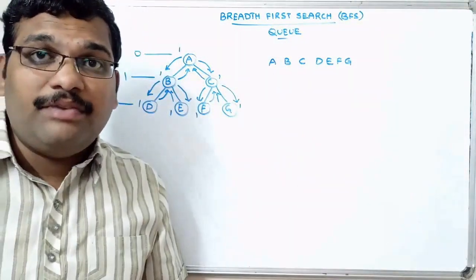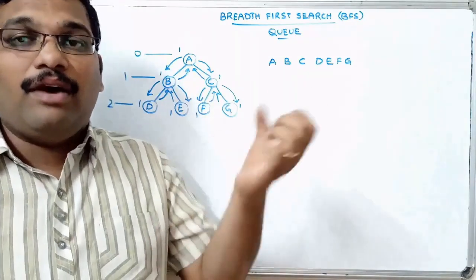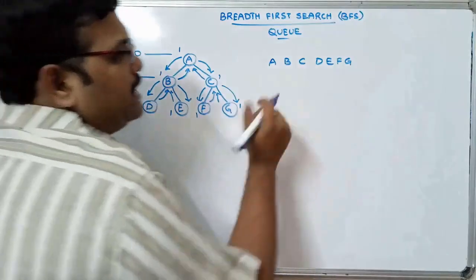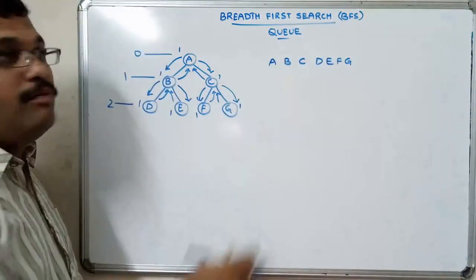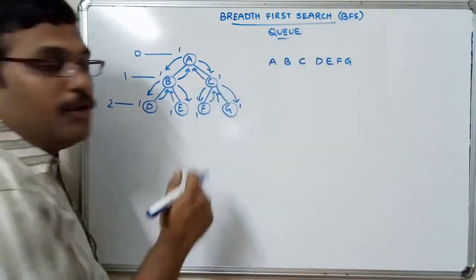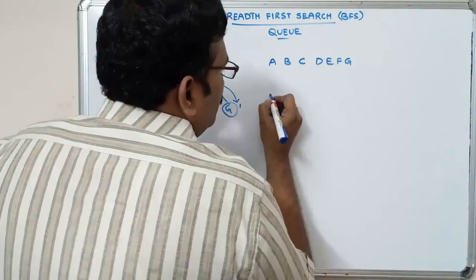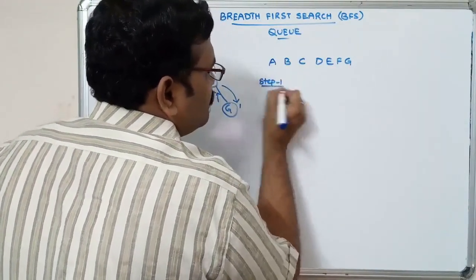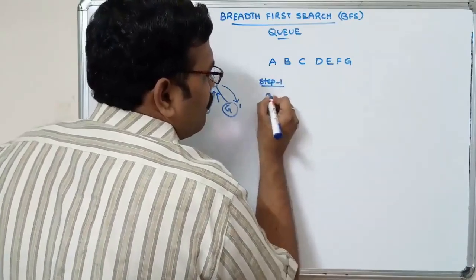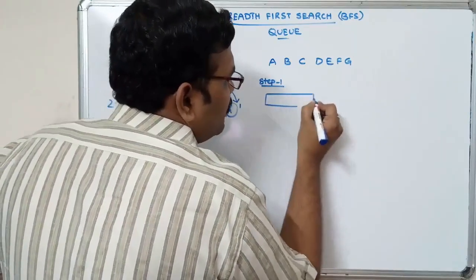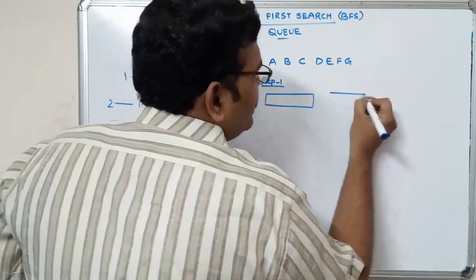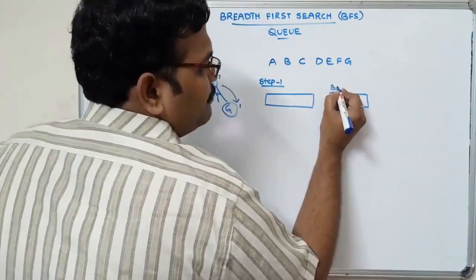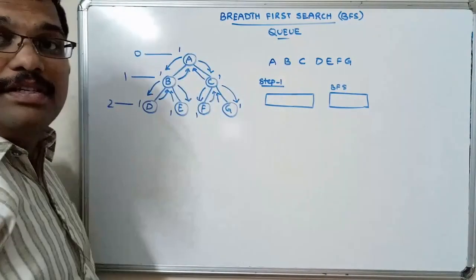In the previous session we saw depth first search — we go in depth. Now we will see how to implement BFS using the queue. Here is a queue and here is the BFS result. Let us assume A is the start node.